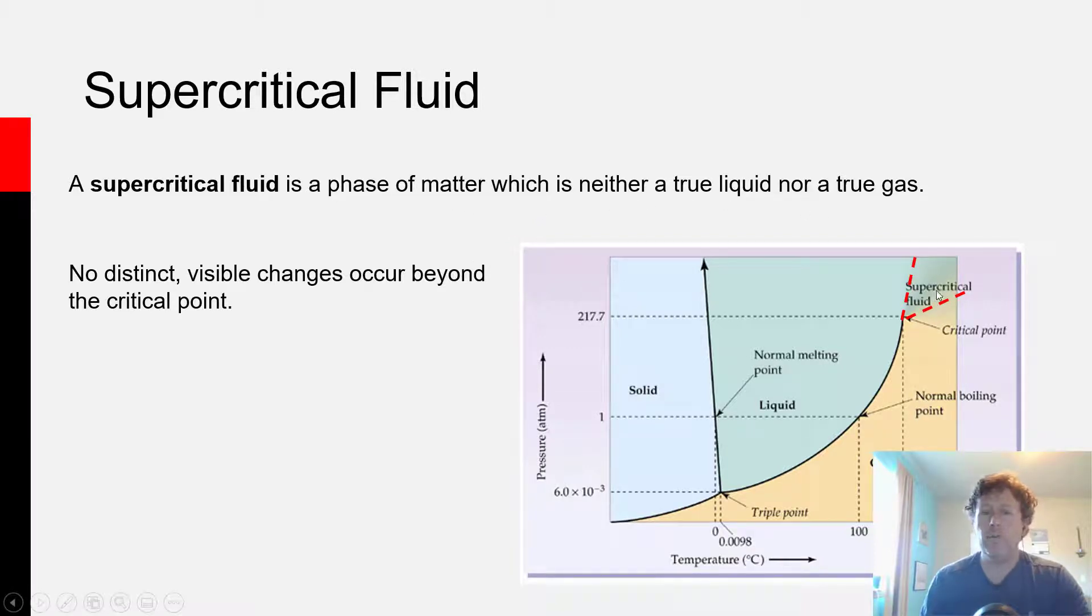And if you push the temperature and pressure beyond the supercritical fluid region, so for instance, if your water is at 374 degrees Celsius and 218 atmospheres of pressure, and you keep pushing to higher pressures and higher temperatures, once you enter that supercritical fluid phase and continue through that phase, no further visible changes occur beyond that point.